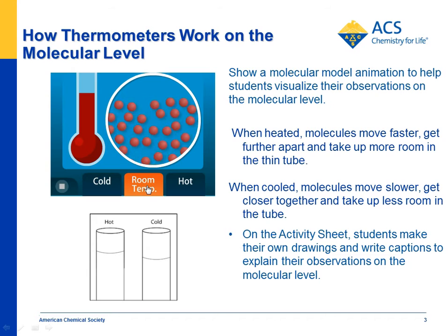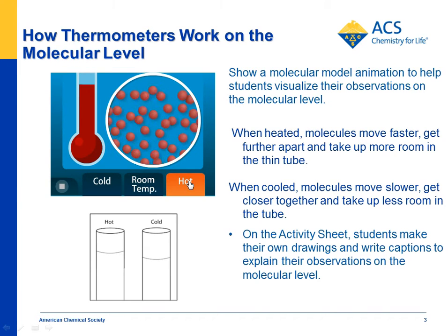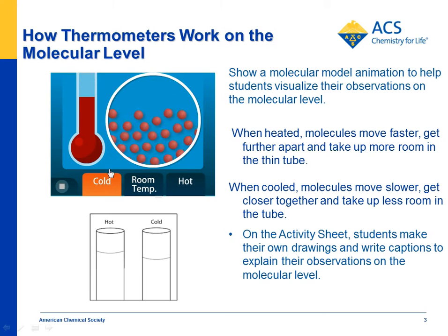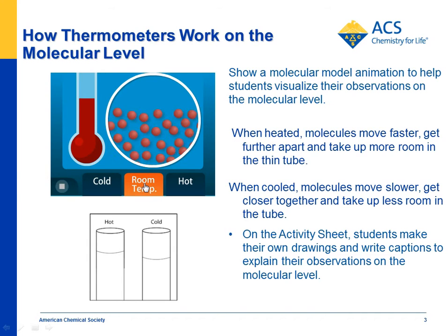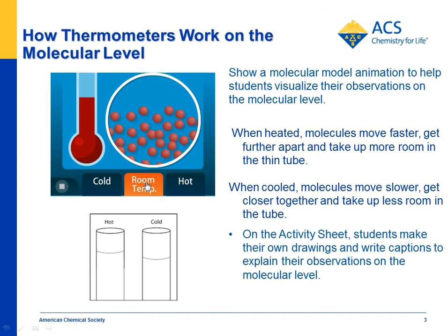The liquid is probably mostly alcohol, but the principles are the same: particles of a liquid are attracted to each other and in motion. If you put it in hot water, the particles move a little faster and get a little further apart, so the red liquid moves up. If you put it in cold water, the particles slow down, get a little closer together, and the liquid moves down the tube. The animation gives kids a visual representation of what's happening at the molecular level, which they can apply to their macroscopic observation of the thermometer.